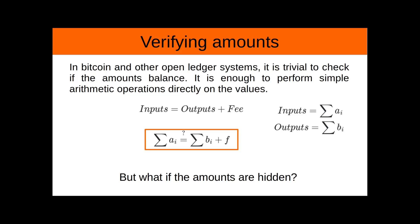In Bitcoin and other open ledger systems, it's trivial to check if the amounts balance. You can simply run a script to make sure that the inputs are equal to the outputs plus the fees, and we can easily verify this by verifying this equation for every transaction.